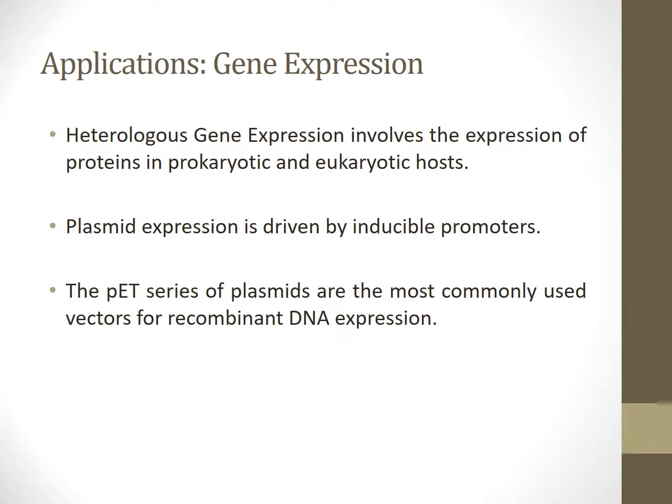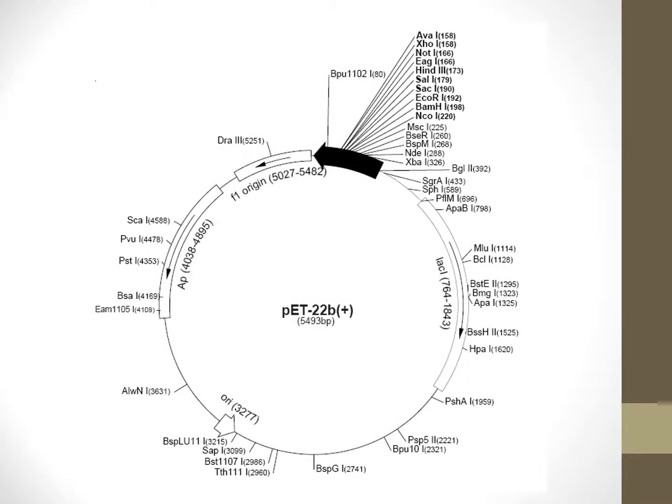In addition to applications to DNA sequencing, plasmids can also be used as vectors for gene expression. The most widely used vectors is the PET series of vectors, which are utilized for the expression of recombinant proteins in Escherichia coli.